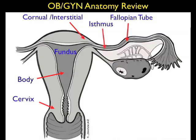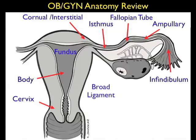We see the area where the fallopian tube enters into the uterus, which is the interstitial region in a normal uterus, and the corneal region in a bicornate uterus — this is where some variants of ectopics can implant. Notice the areas of the fallopian tube to the right, which we'll concentrate more on with regard to ectopic pregnancy, and we see the broad ligament encasing the fallopian tube and the ovary.